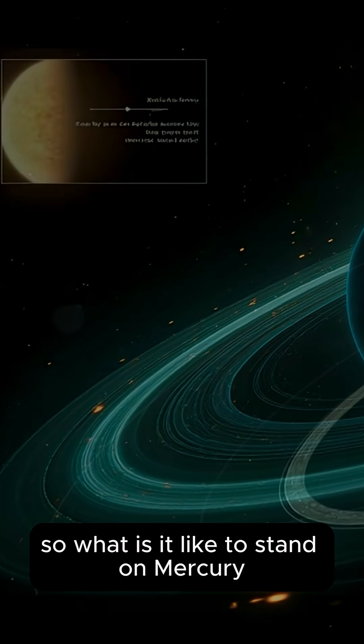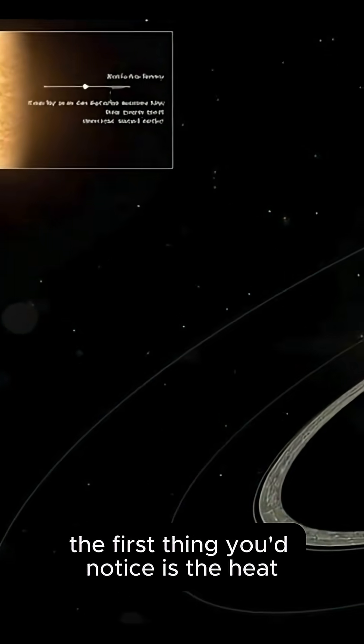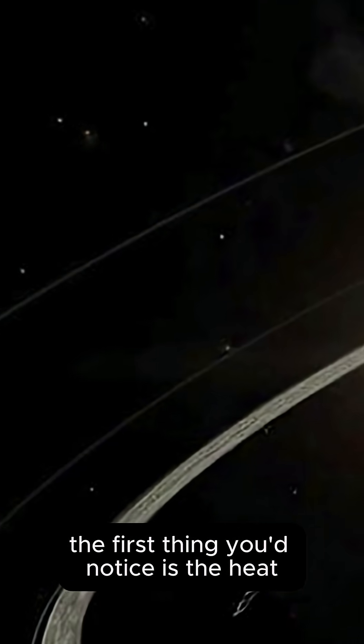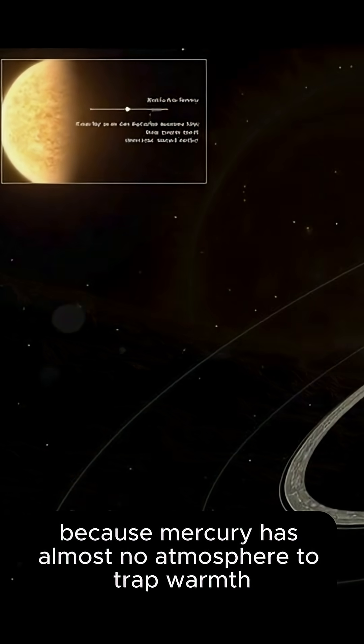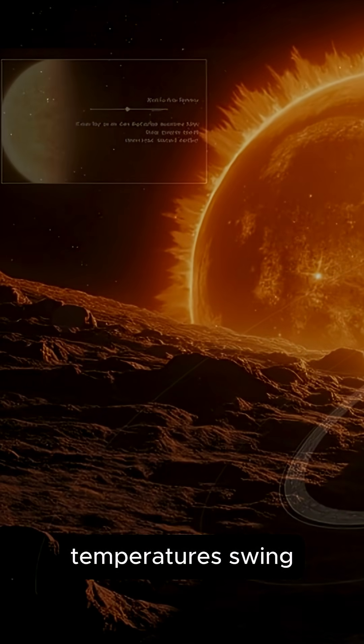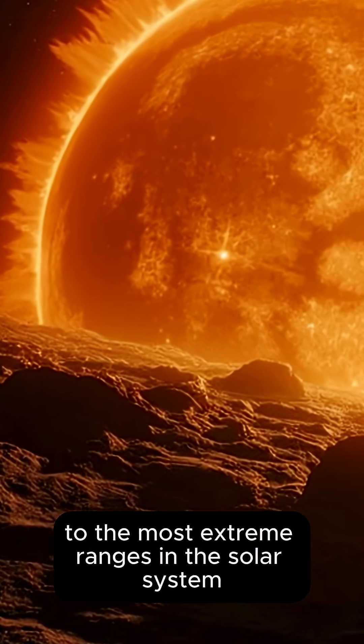So what is it like to stand on Mercury? The first thing you'd notice is the heat, or perhaps the cold. Because Mercury has almost no atmosphere to trap warmth, temperatures swing to the most extreme ranges in the solar system.